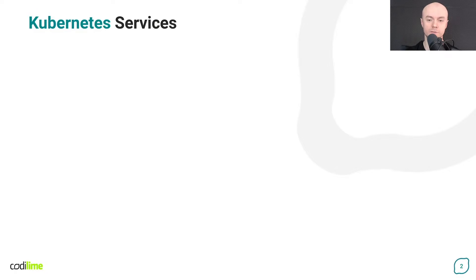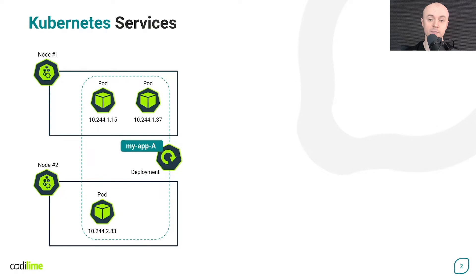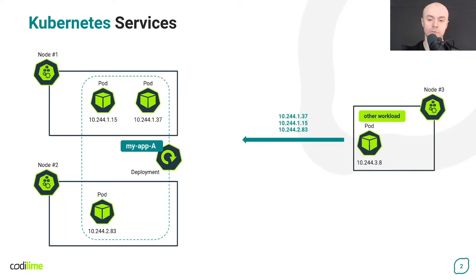First, let's recall what a service in Kubernetes is and what it is used for. Imagine an example deployment with a specified number of pod replicas running in the cluster. When another workload from the cluster wants to talk to the deployment's resources, it can use any IP address assigned to the deployment's pods. However, this is not the best approach. Pods in Kubernetes are non-permanent resources. They can be created or removed dynamically as part of a deployment — for example, while it is being scaled or due to some failure — when new pods are created to replace the old ones, they are assigned new IP addresses. And therefore relying directly on the pods' IP addresses is not the best idea, as they change over time.